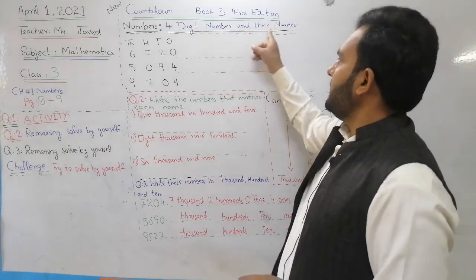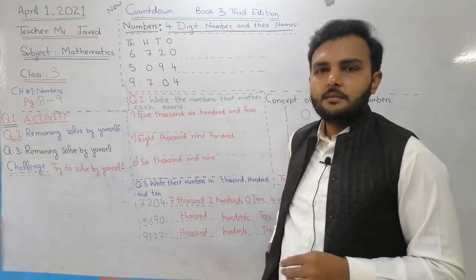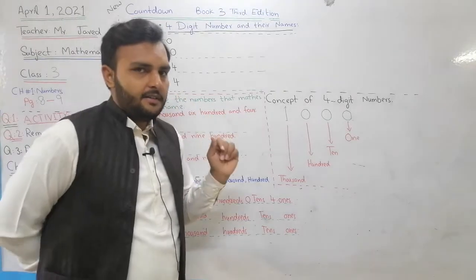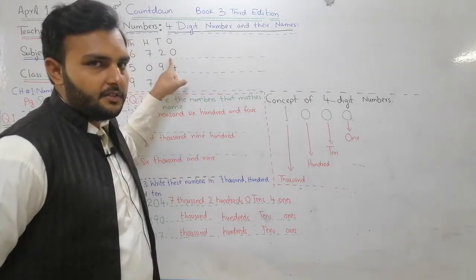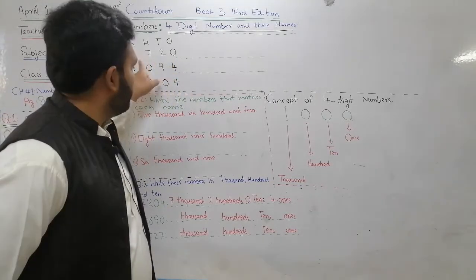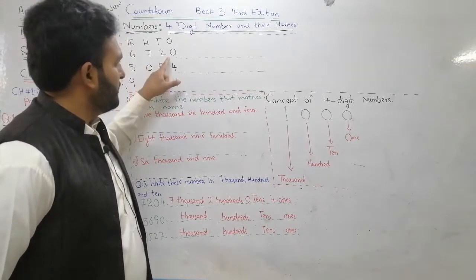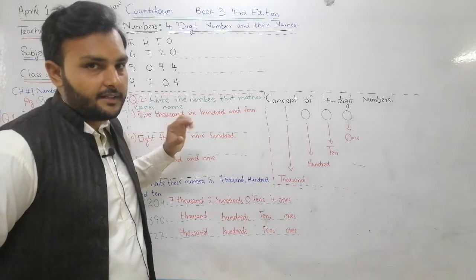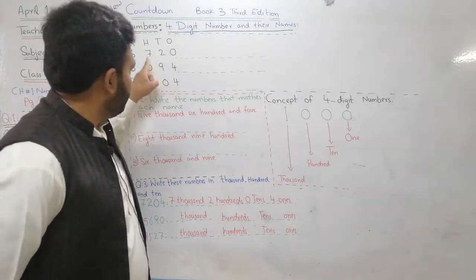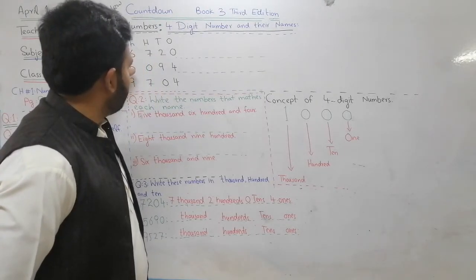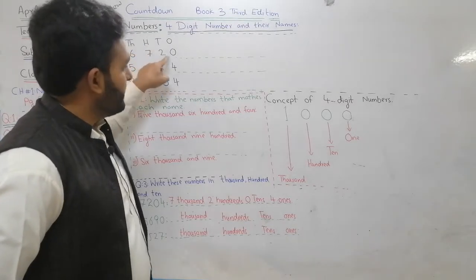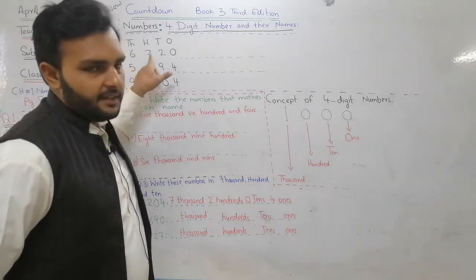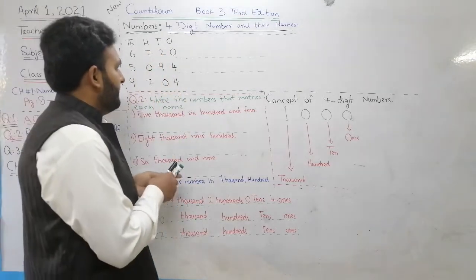Now we are starting today's lecture. The first topic is four-digit numbers and their names — we are going to write four-digit numbers and their names. Keep in mind: the first digit is for ones, then tens, hundreds, thousands. So for example: 0 is here for ones, 2 is here for tens, 7 is here for hundreds, 6 is here for thousands — so we read it as six thousand seven hundred and twenty.